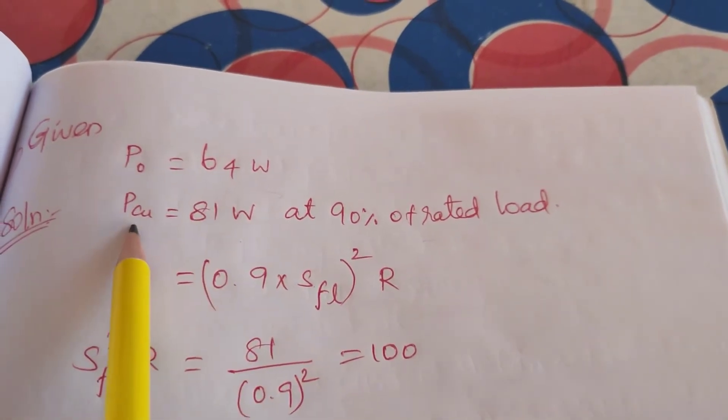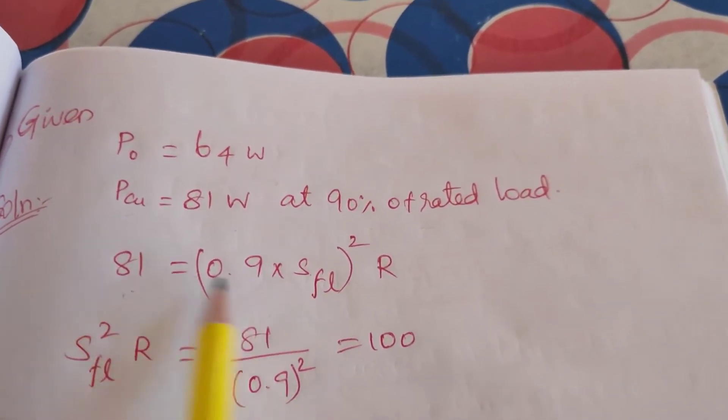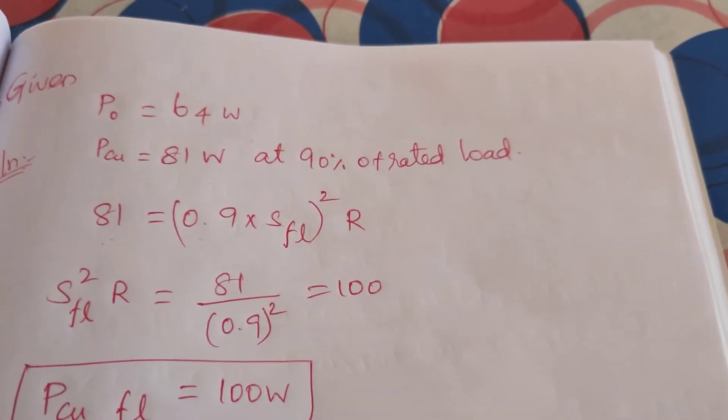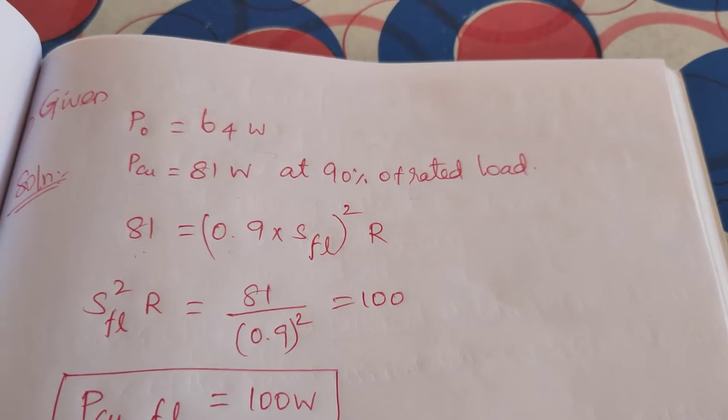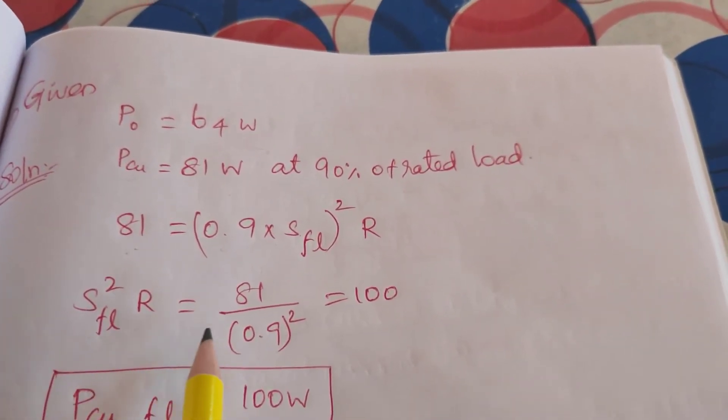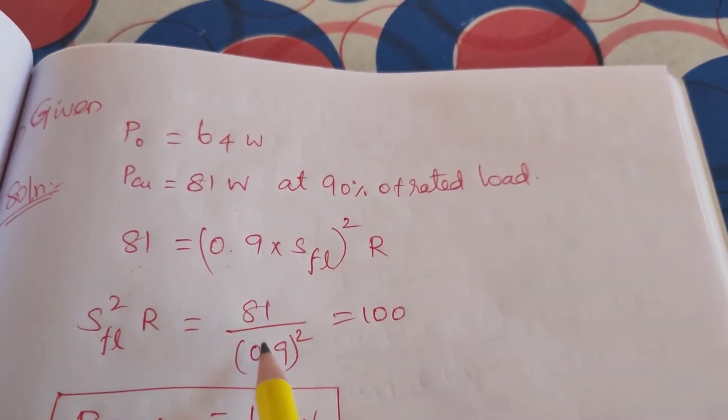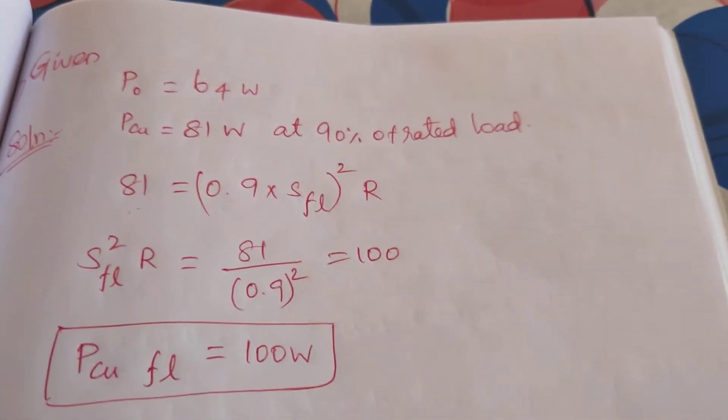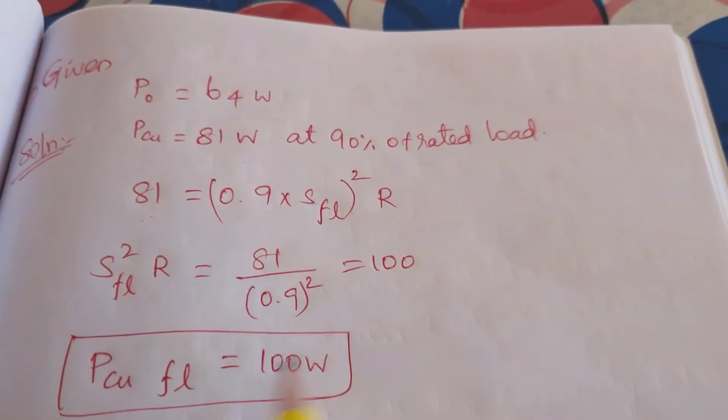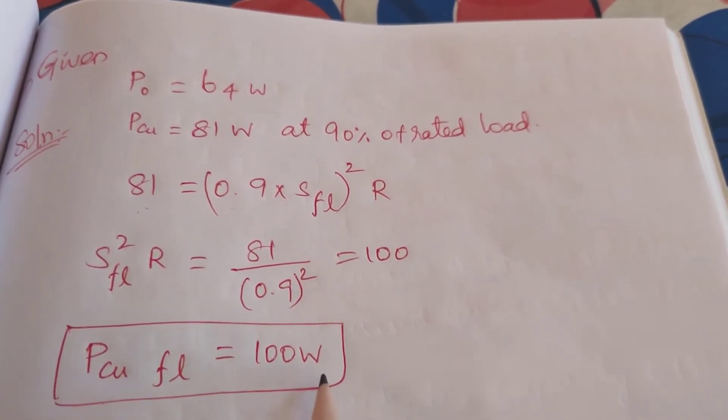So the equivalent copper loss, that is 81 watts at 0.9 of S_FL whole squared into R. S_FL squared into R is equal to... So the total copper loss is 100 watts.